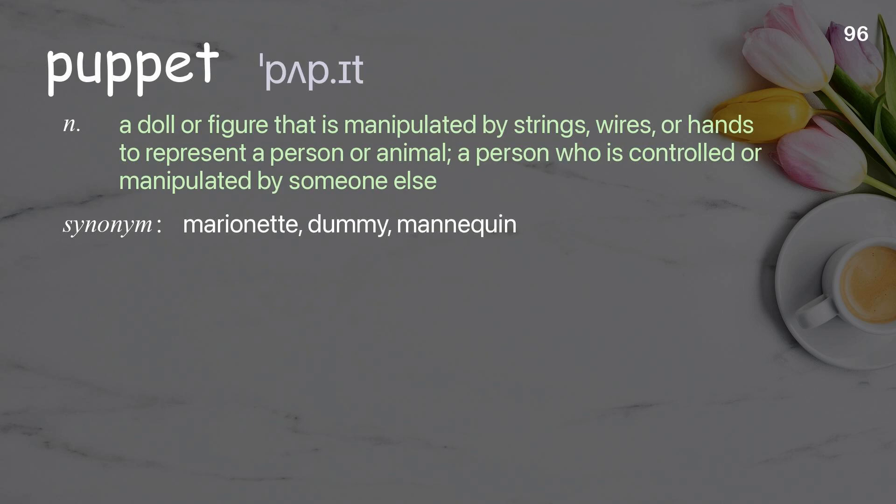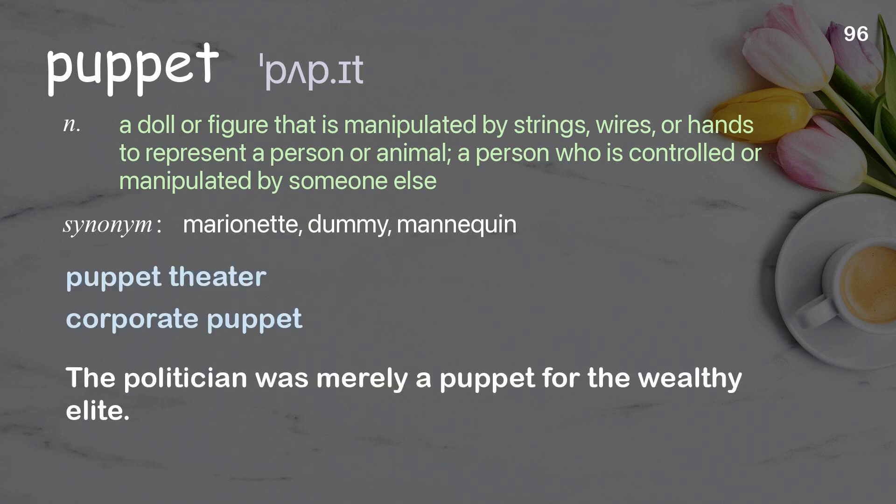Puppet: A doll or figure that is manipulated by strings, wires, or hands to represent a person or animal; also a person who is controlled or manipulated by someone else. Examples: Puppet theater. Corporate puppet. The politician was merely a puppet for the wealthy elite.